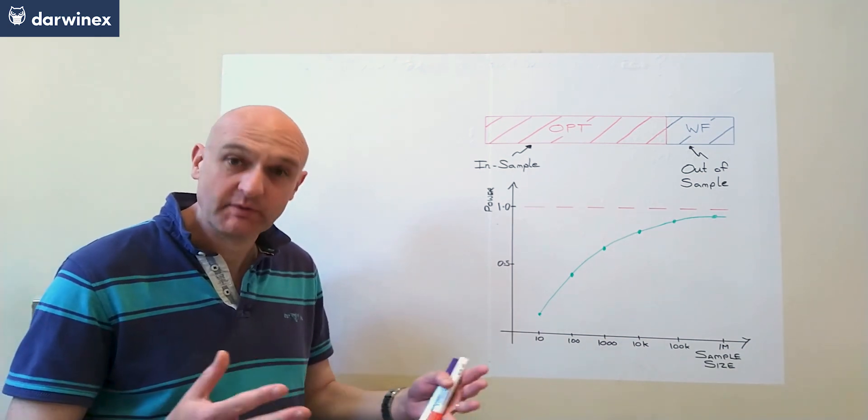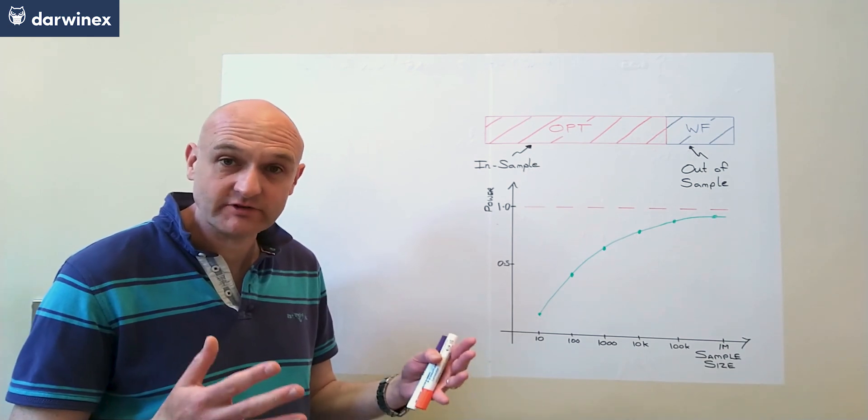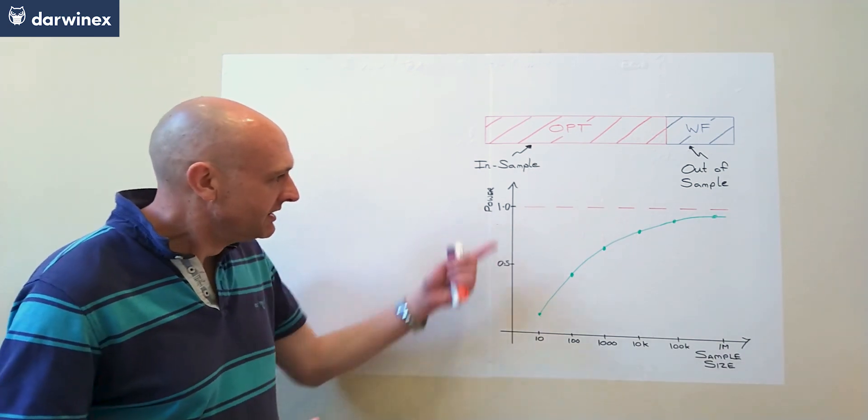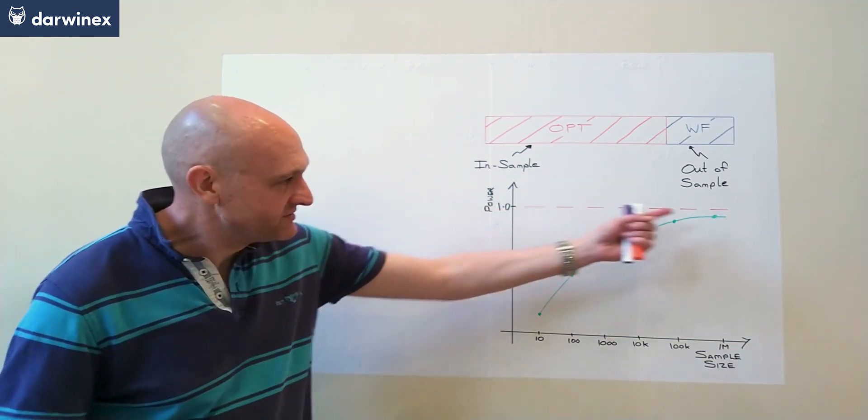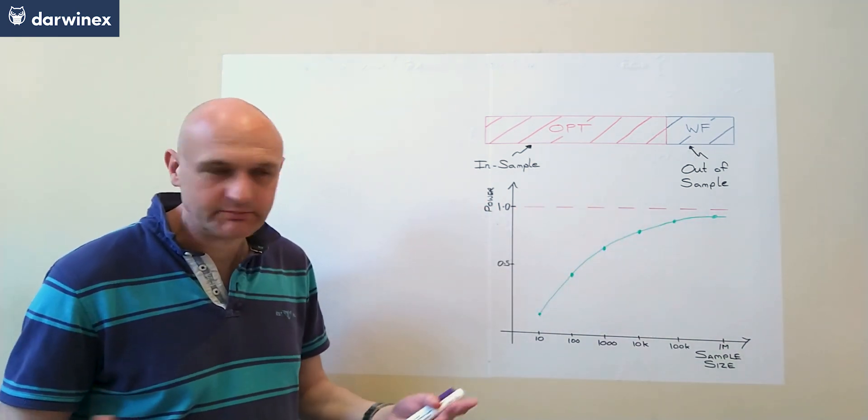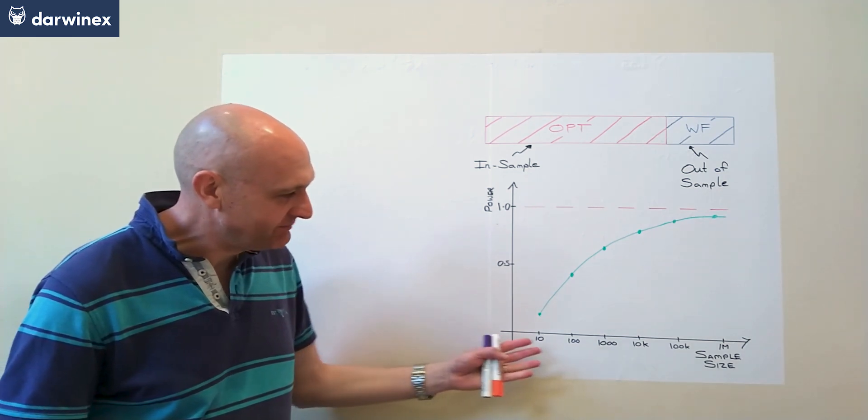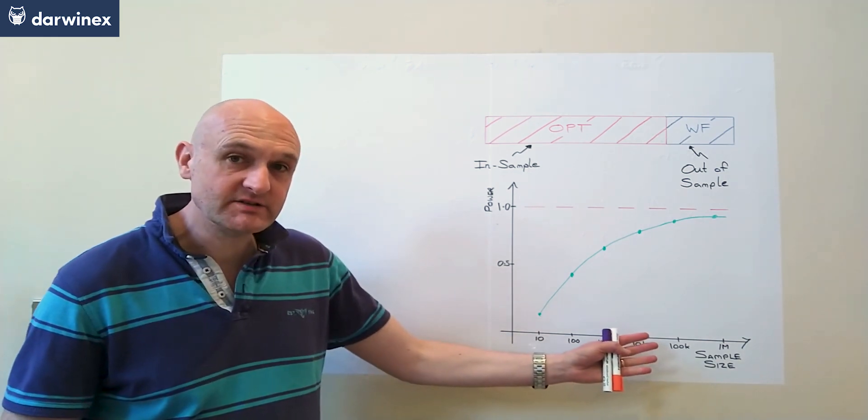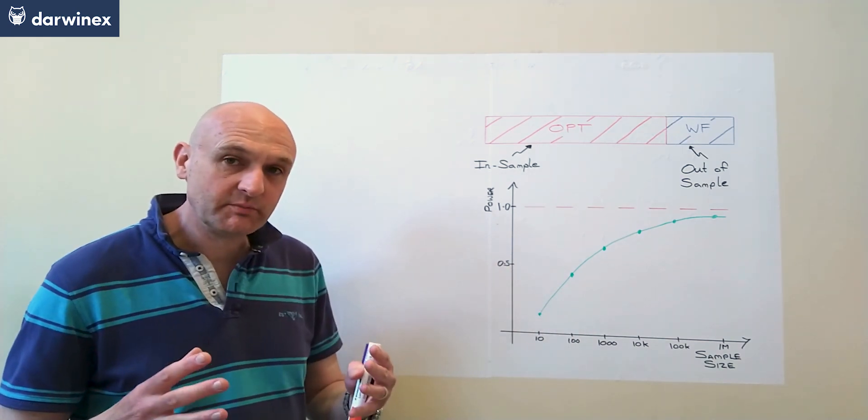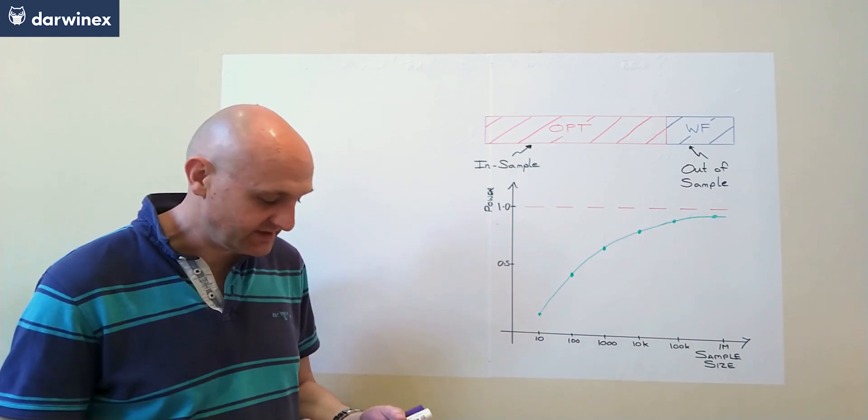which if you remember is the probability of obtaining a statistically significant result. The curves always asymptote out at that 1.0 level because it's a probability. And what you'll notice is that as sample size increases, the probability that we're going to obtain a statistically significant result also increases.